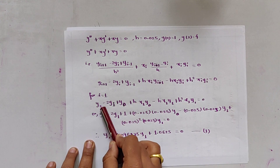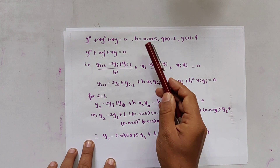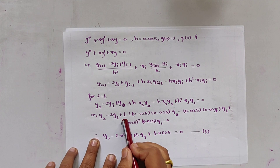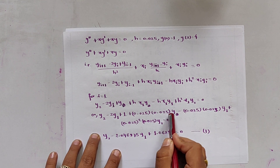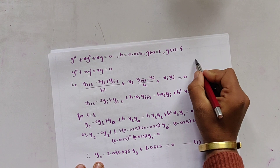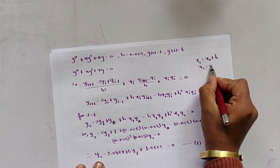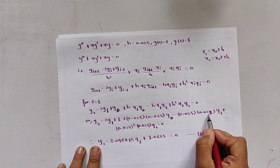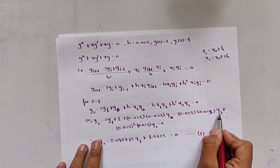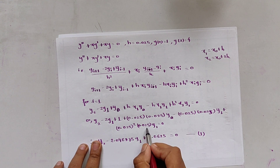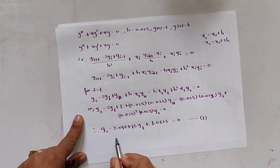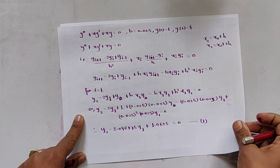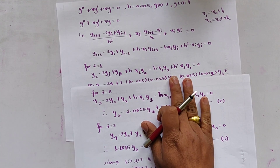Taking i = 1 and substituting h = 0.025 and x_1 = x_0 + h = 0.025, with y_0 = 1, we simplify and get: y_2 - 2.046875·y_1 + 1.0625 = 0. This is equation 1.